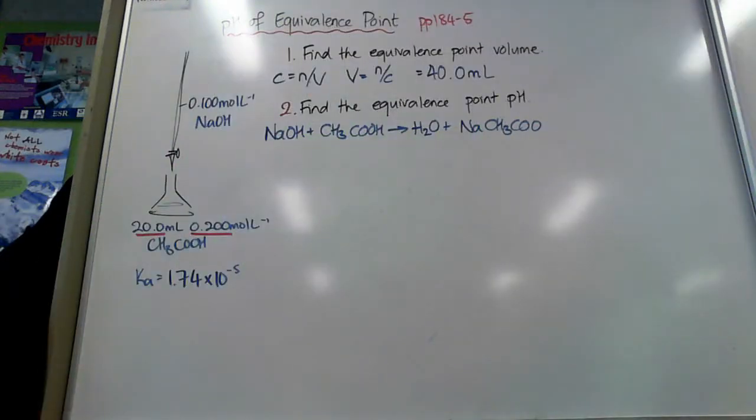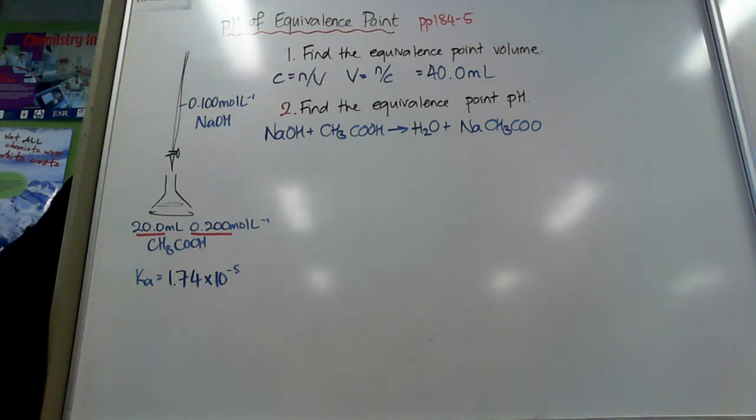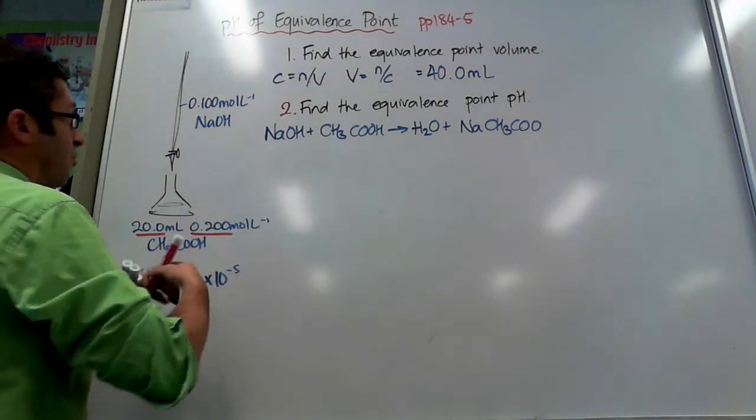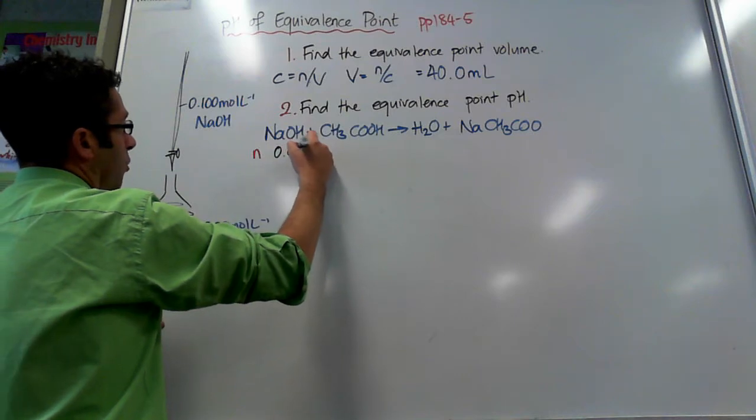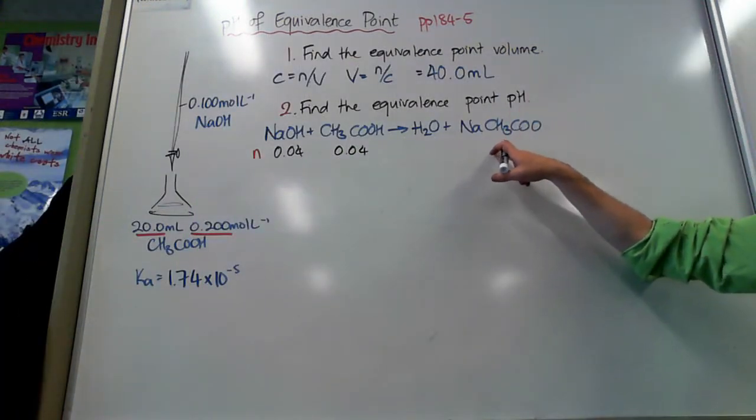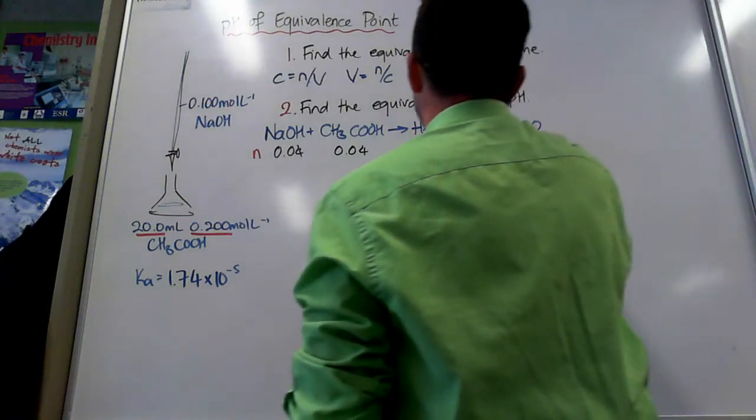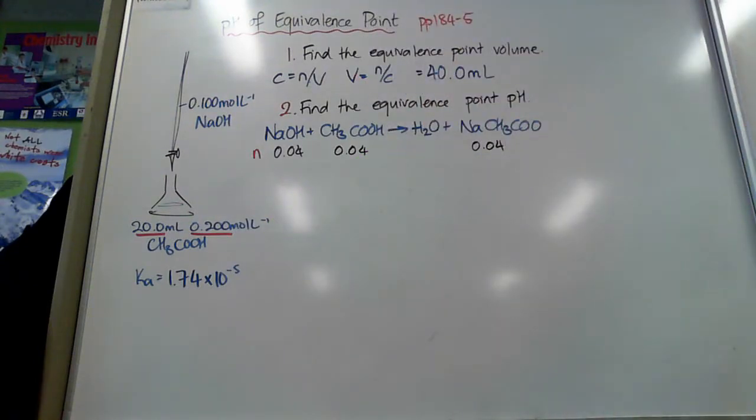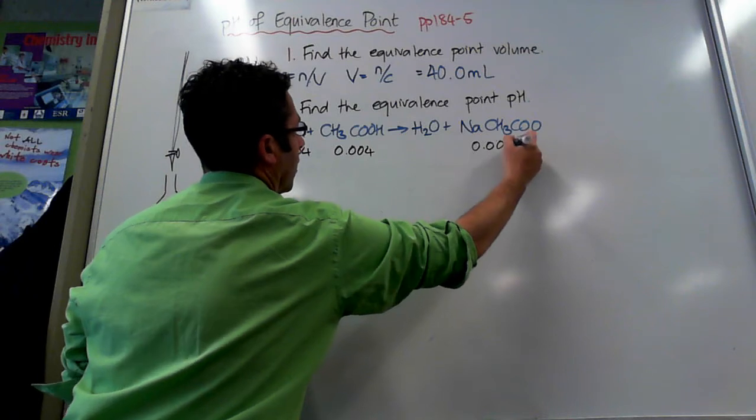Now what I'm going to do very quickly is go through how much there is of everything. Initially, I found that the amount was 0.004 moles for these two. So that's what was at equivalence point. So if I've got 0.004 moles of that, I must have 0.004 moles of that because it's a balanced equation, which means I must have 0.004 moles of this product because there's no numbers in front of anything, so they're all in a one-to-one-to-one ratio.